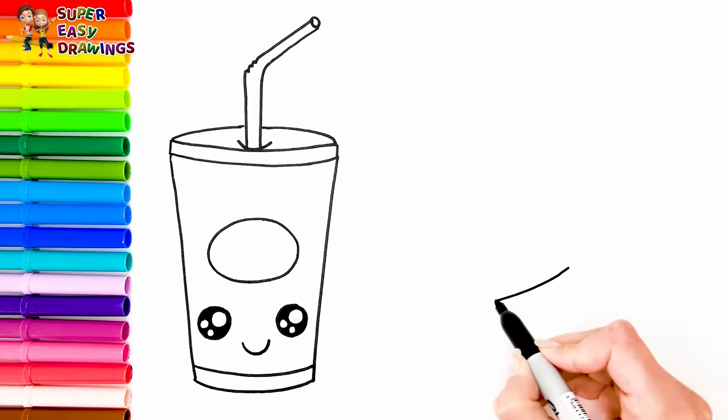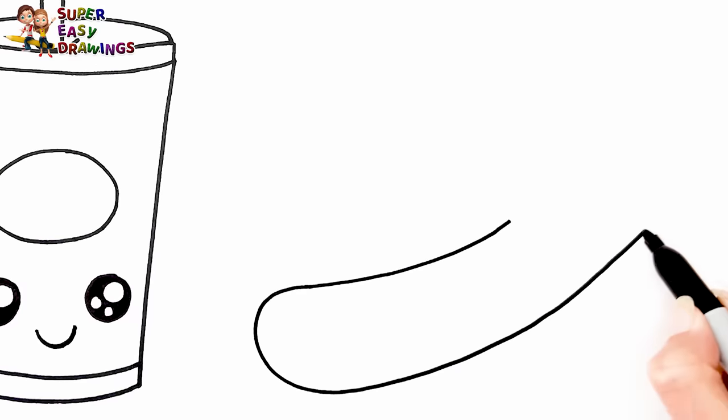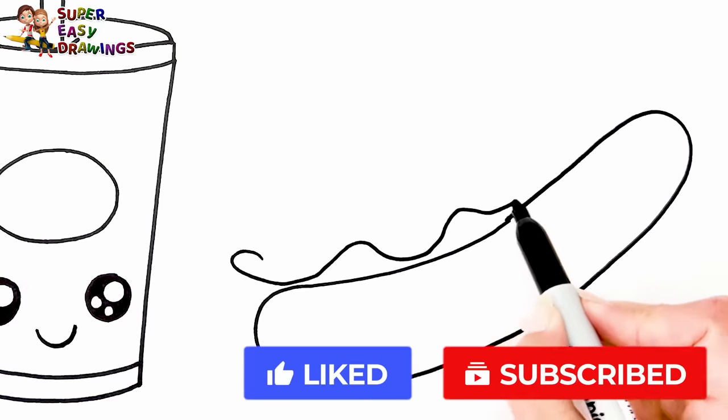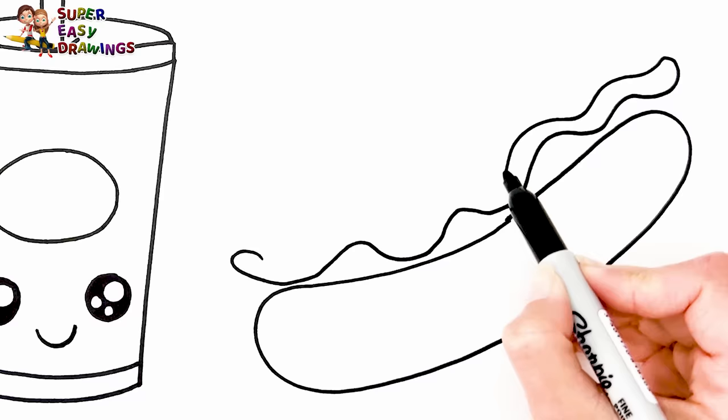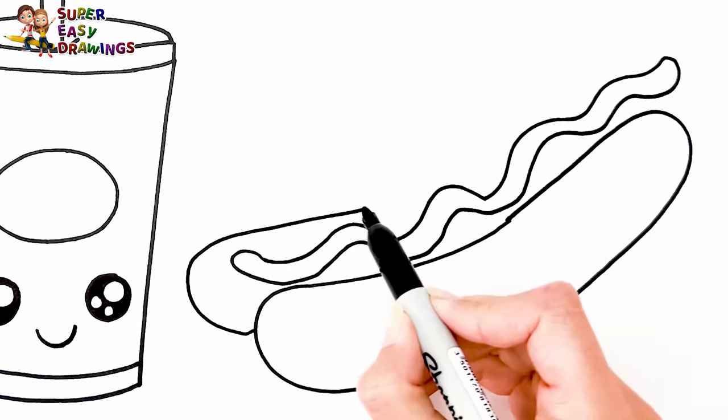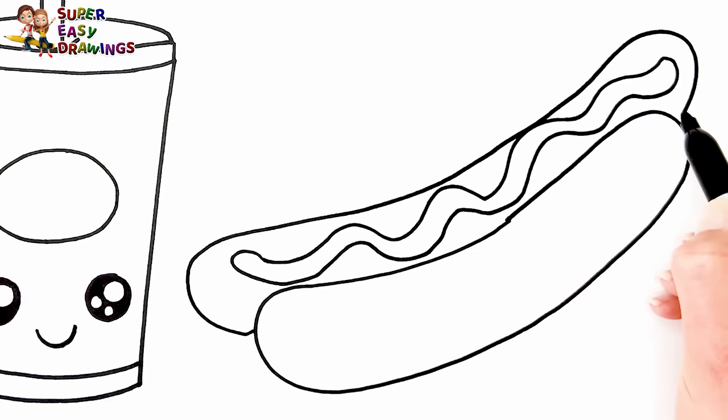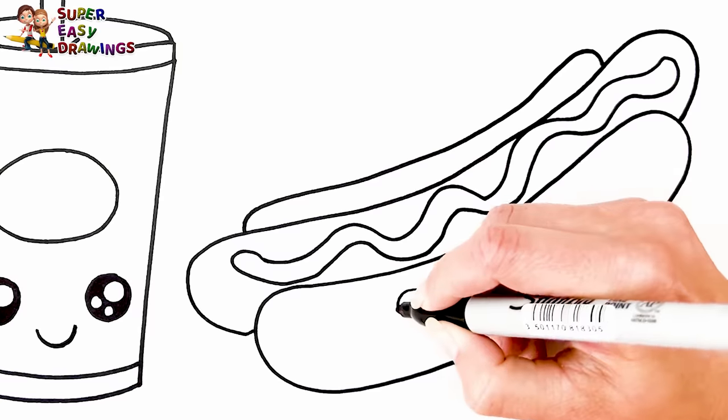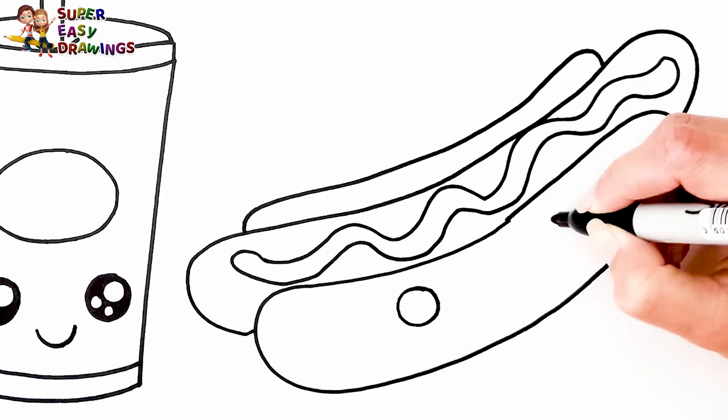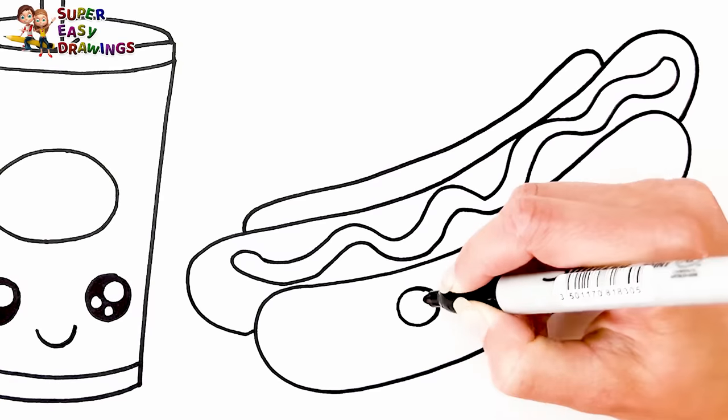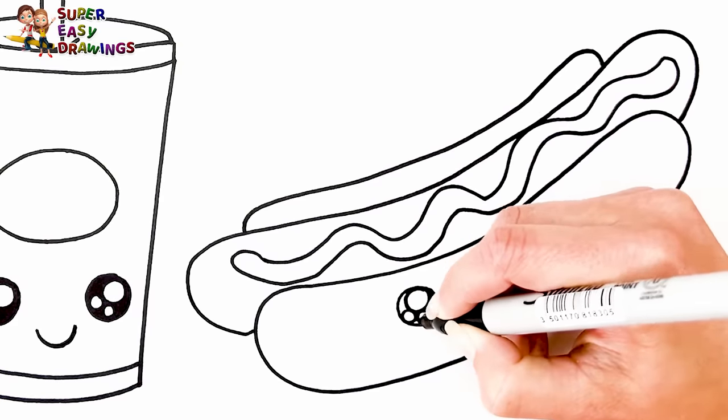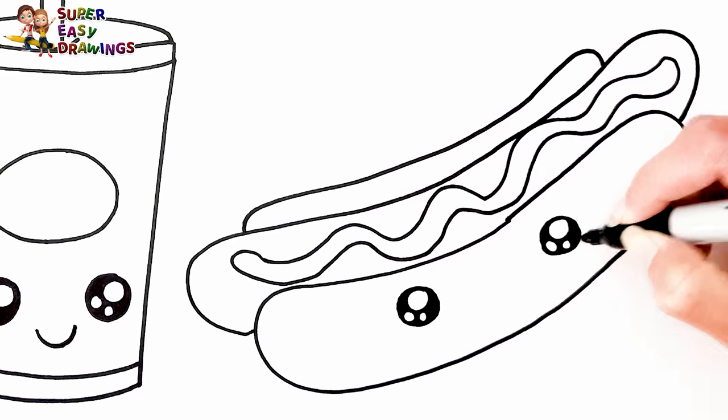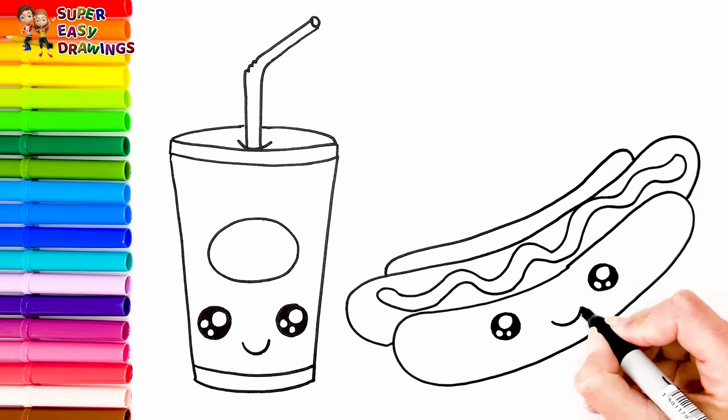Let's draw the hot dog. Now I draw the bun. The little wavy mustard. Then the sausage. Finally, the other part of the bun. I draw his two cute eyes and his smiling mouth.